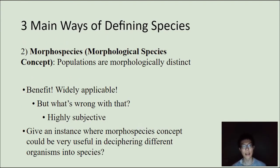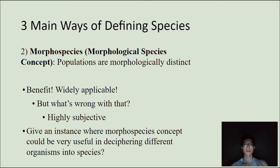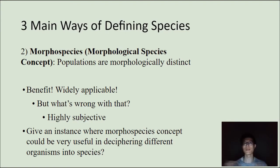The second way is the morphospecies concept, and this one makes the most general sense. It's looking at morphology — plumage patterns, shape, and size. The benefit of this is it's widely applicable. You can say this organism is blue in color and this one is red in color — they're different species. This is often one of the most straightforward ways to do it, and you can use this method to help kids understand the species concept — just different organisms looking different from one another.